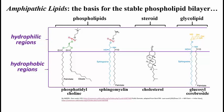Here's a glycolipid. In this case it's a cerebroside, so it's an important brain cell lipid. But all cells have glycolipids — lipids with a sugar attached rather than a phosphate group.